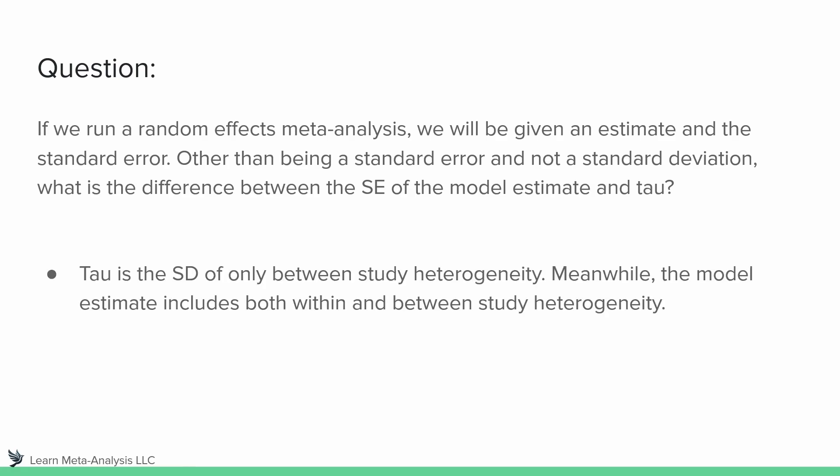Tau is the standard deviation of only between-study heterogeneity. Meanwhile, the model estimate is actually including within and between-study heterogeneity. That's a small but very important difference, and it really highlights the importance of tau and tau-squared.